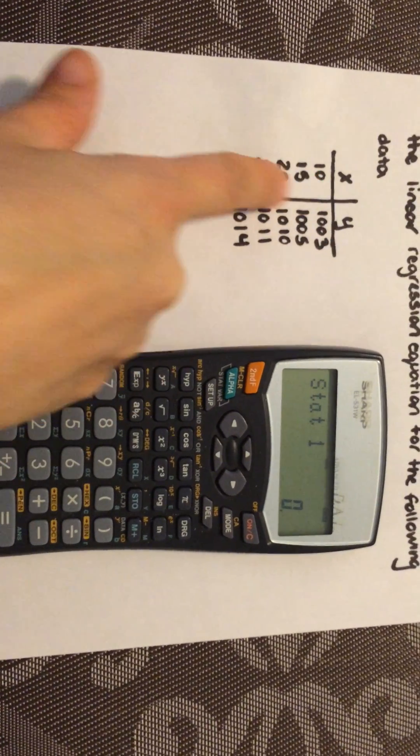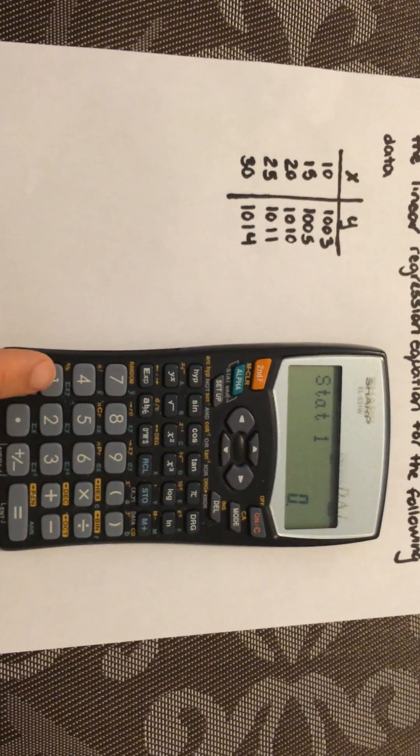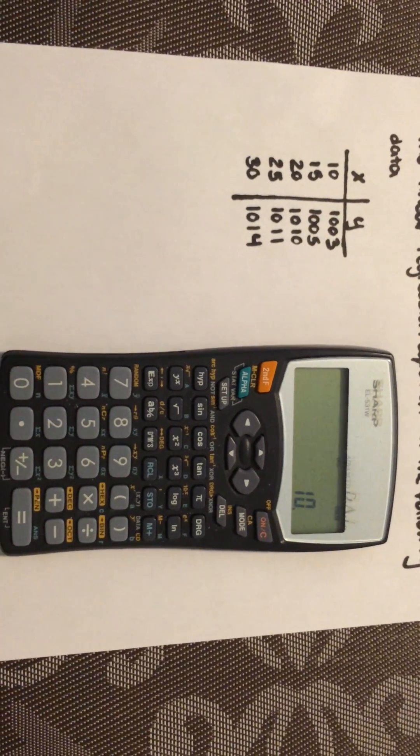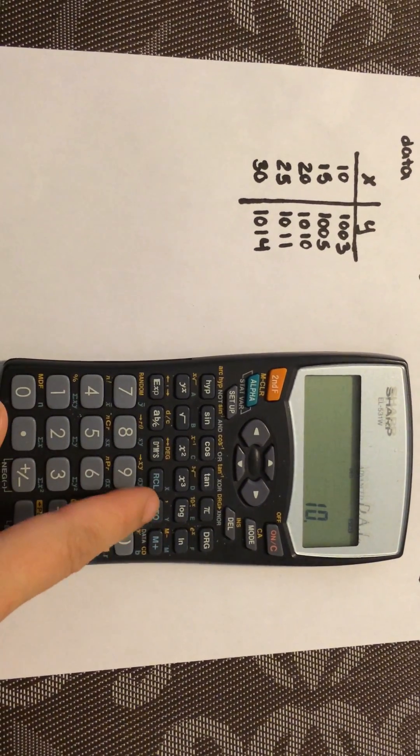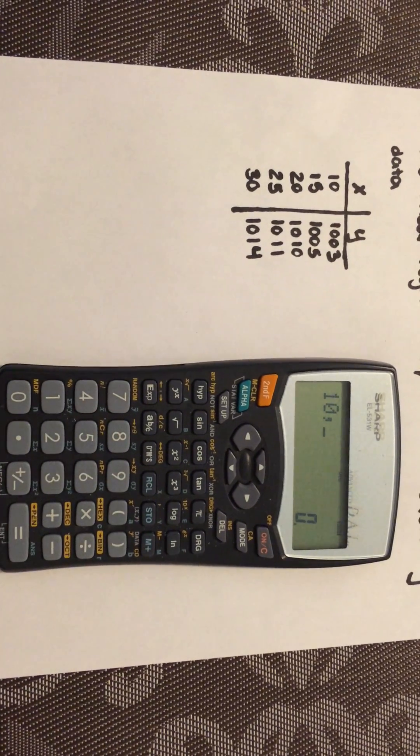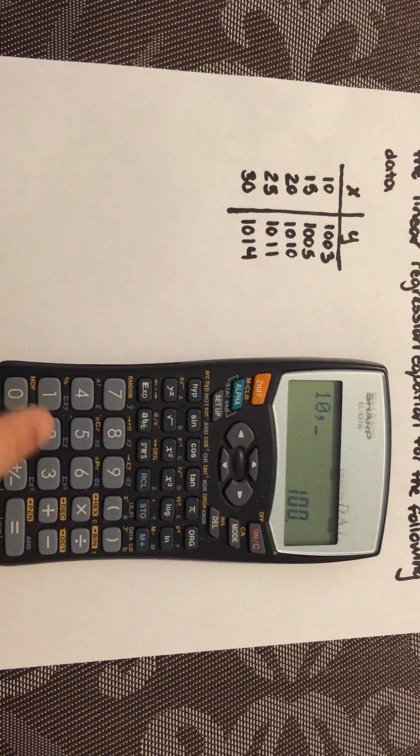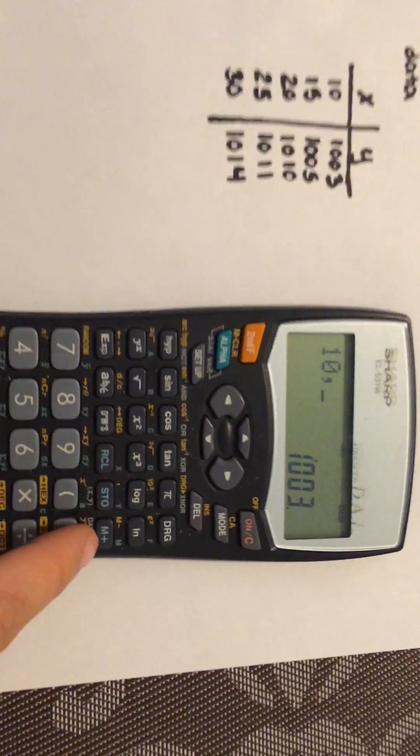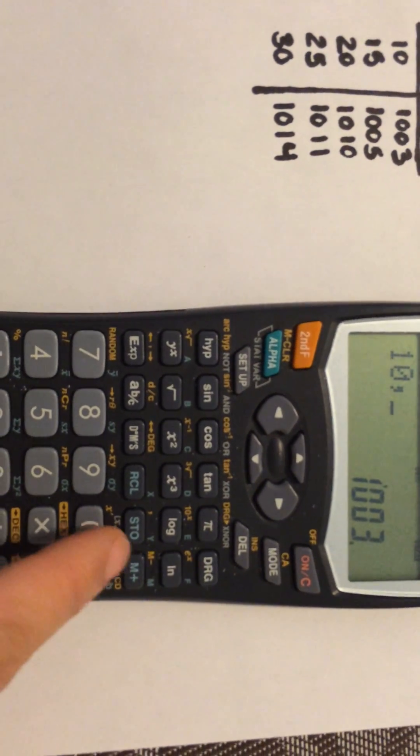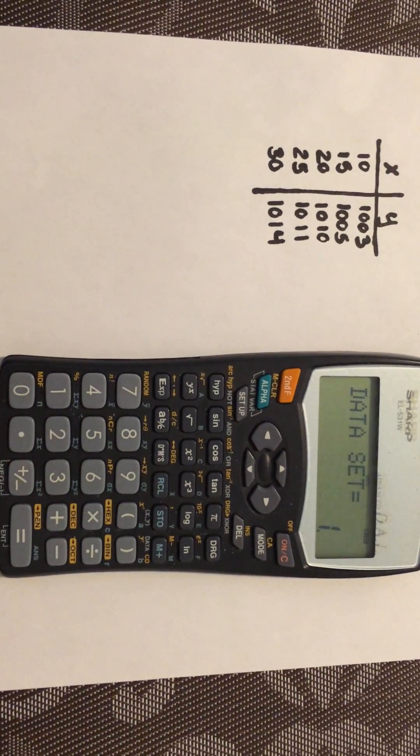Now we'll enter all this data. First, enter 10, then hit the STO button to store it. It'll give you a comma, indicating that's the X value. Then enter 1003 and press the M plus key, which is right beside it. It's counting the data as we go.